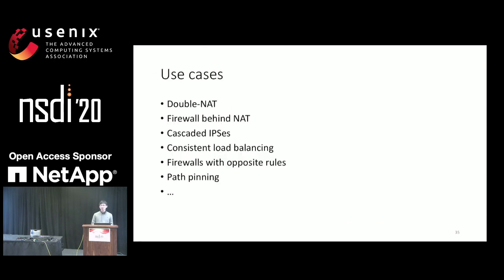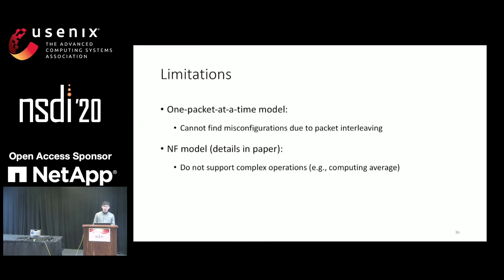In addition to efficiency, we support a range of use cases such as DoubleNAT, Cascaded ISPs, and others. NetMC does have some limitations: since we simplify the model, we cannot find misconfigurations due to packet interleaving. The second limitation concerns the NF model — we cannot support complicated operations in NFs such as computing the average.